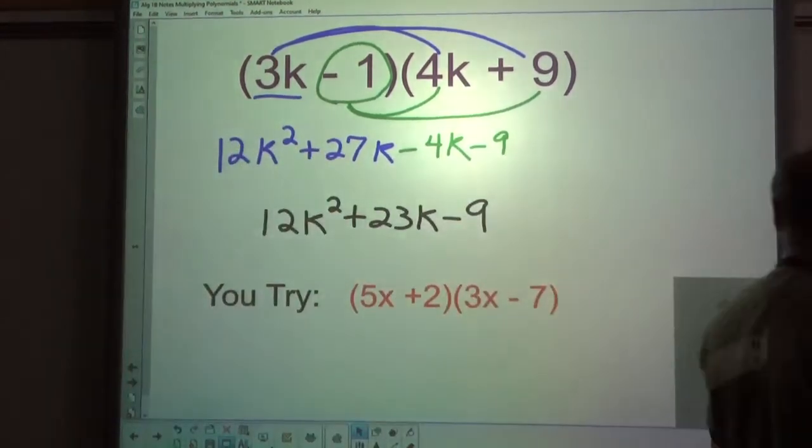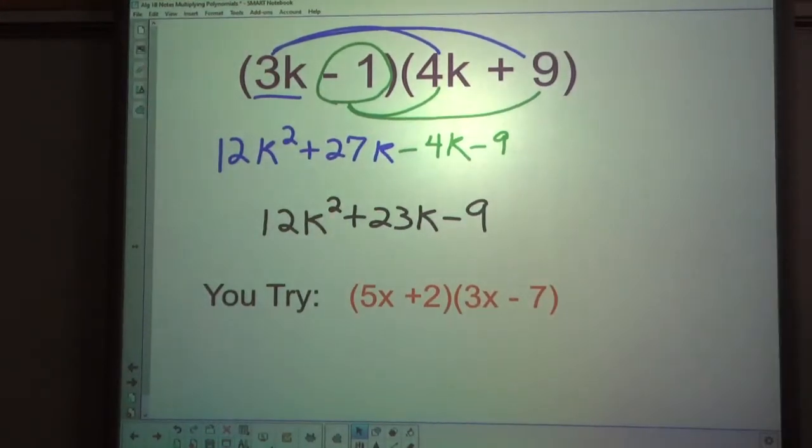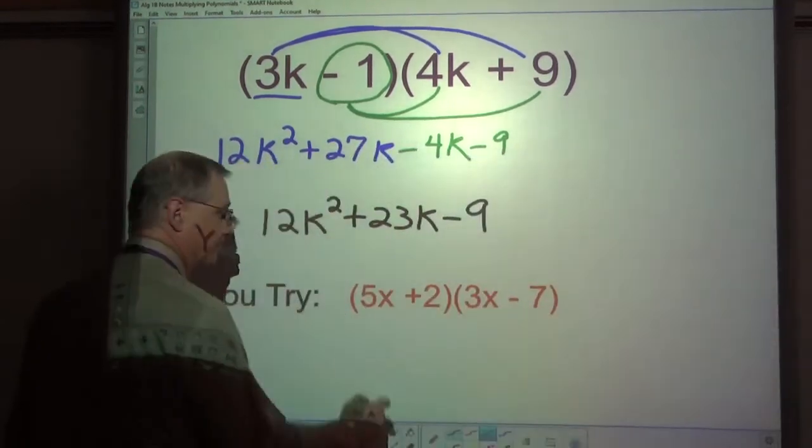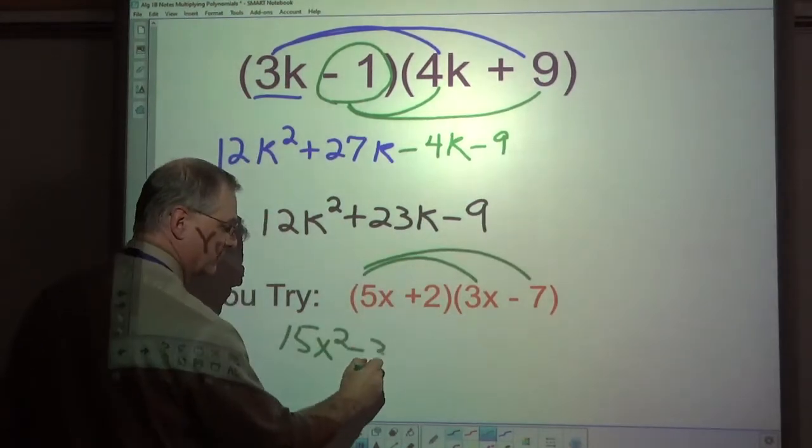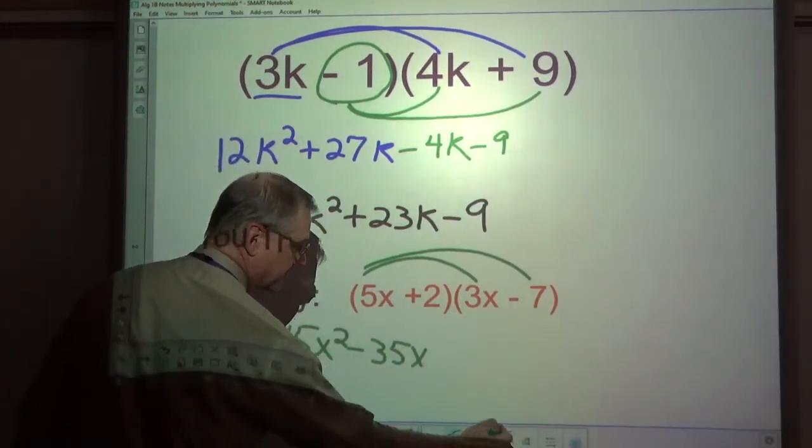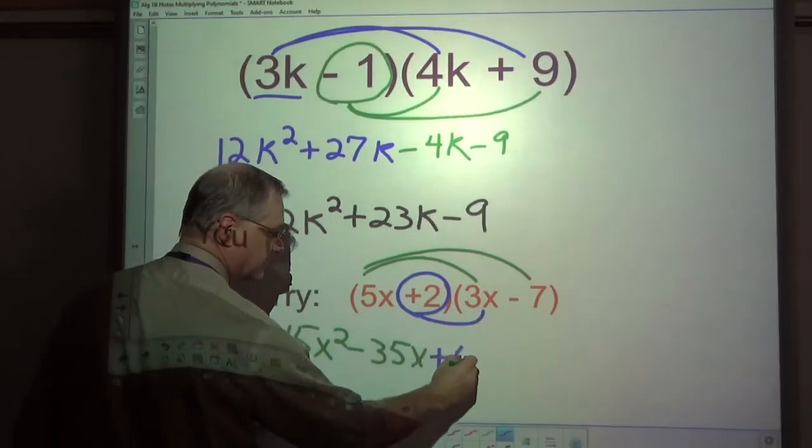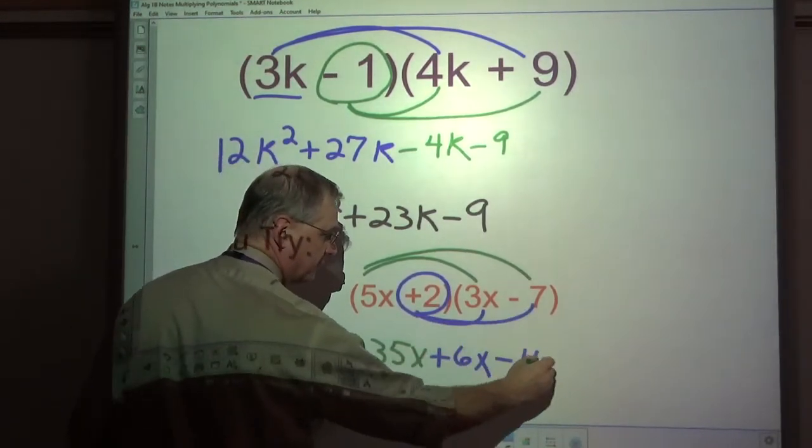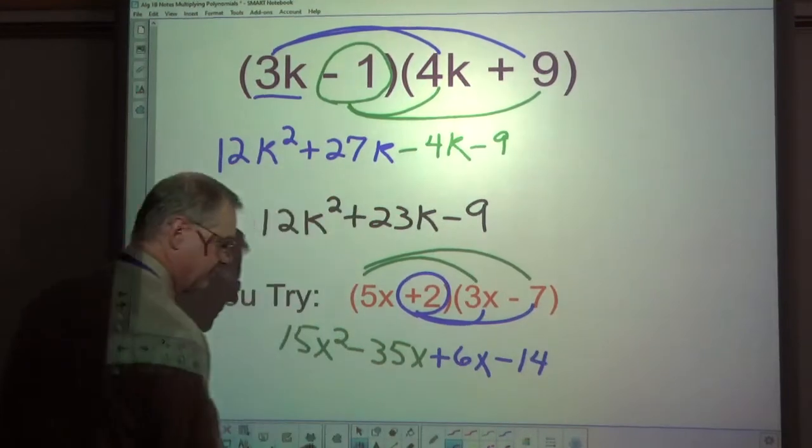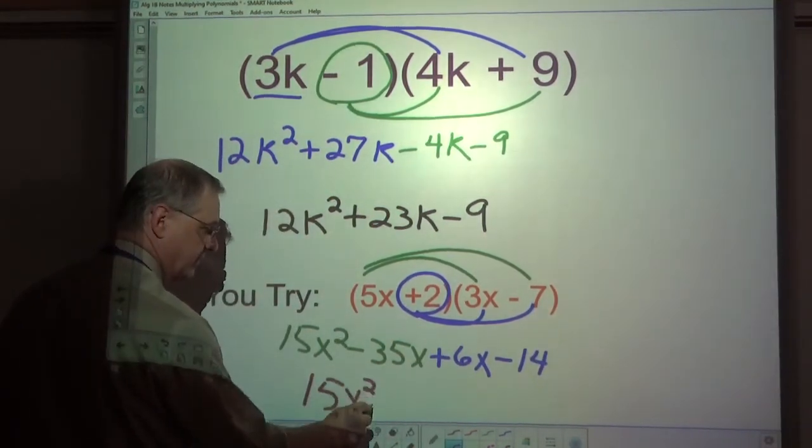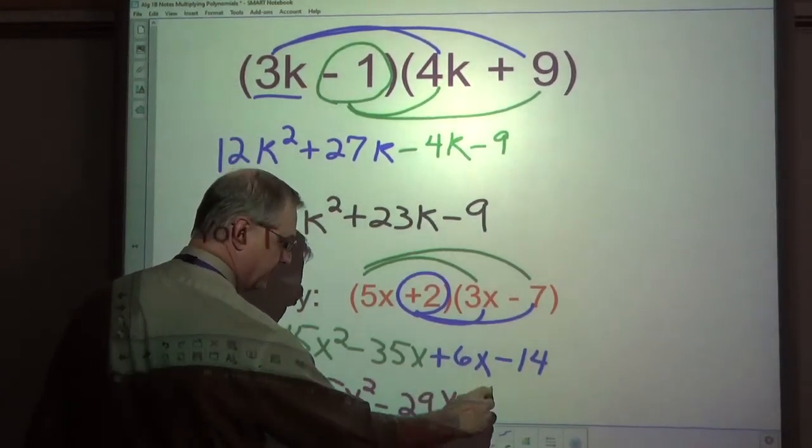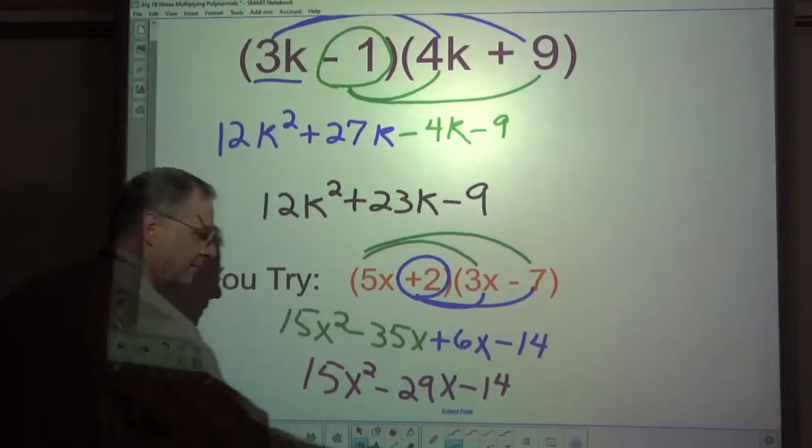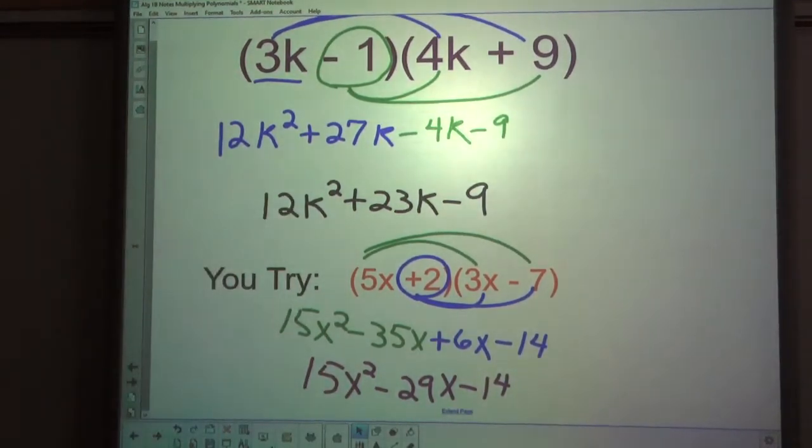You give this one a try. See how you make out. Now that you've given it a try, let's see what you got. 15x squared minus 35x plus 6x minus 14. Final answer here. 15x squared, let's see, minus 29x minus 14. There's your final answer for that one.